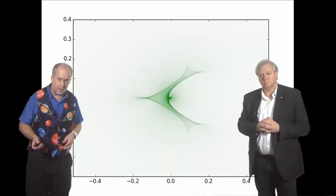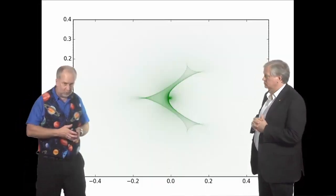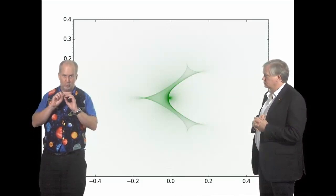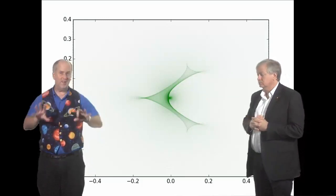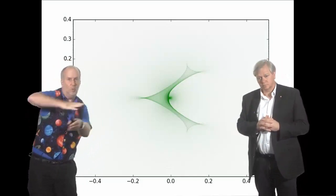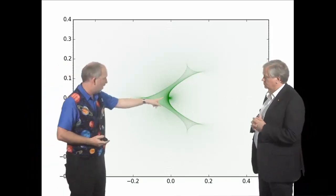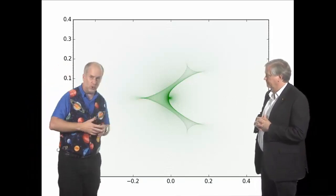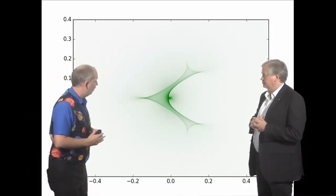For gravitational lensing remember we what we did was imagine being in the background shooting out a whole bunch of rays and the rays get bent in different ways by in this case I put a star and a planet in the foreground and then you look at where they land on a plane through the earth.